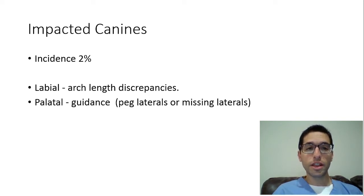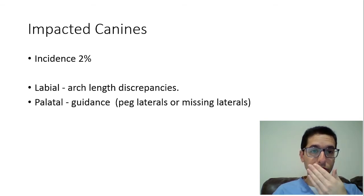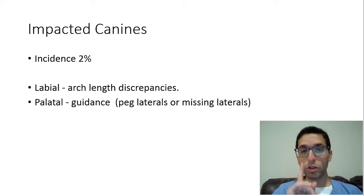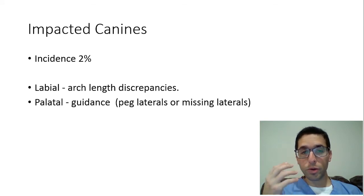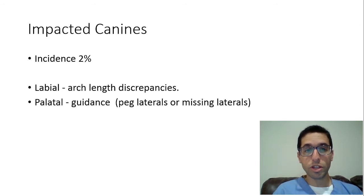There are different theories as to what causes impacted canines, and the theories correlate to the positioning. If it's a labial or buccal or facial impacted canine, it's typically because of an arch length discrepancy — there's just not enough space. When it's labial, it tends to be vertical, straight up and down. It grew in the right position and the right orientation, but it just could not come into the arch because there wasn't enough space.